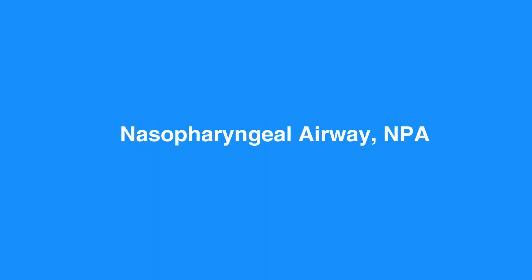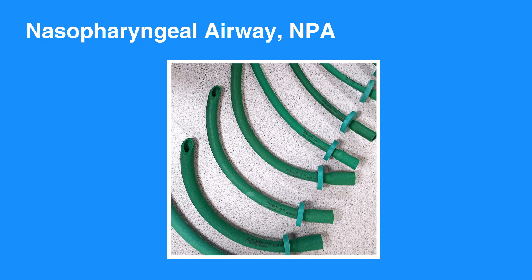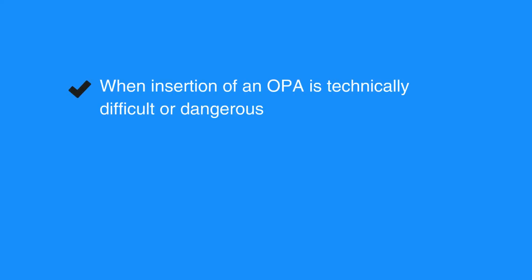The nasopharyngeal airway, or NPA, is a soft rubber or plastic uncuffed tube that provides a conduit for airflow between the nares and the pharynx. The NPA is used as an alternative to an OPA in individuals who need a basic airway adjunct. Unlike the oral airway, NPAs may be used in conscious or semi-conscious individuals with intact cough and gag reflex. Use NPA when insertion of an OPA is technically difficult or dangerous.